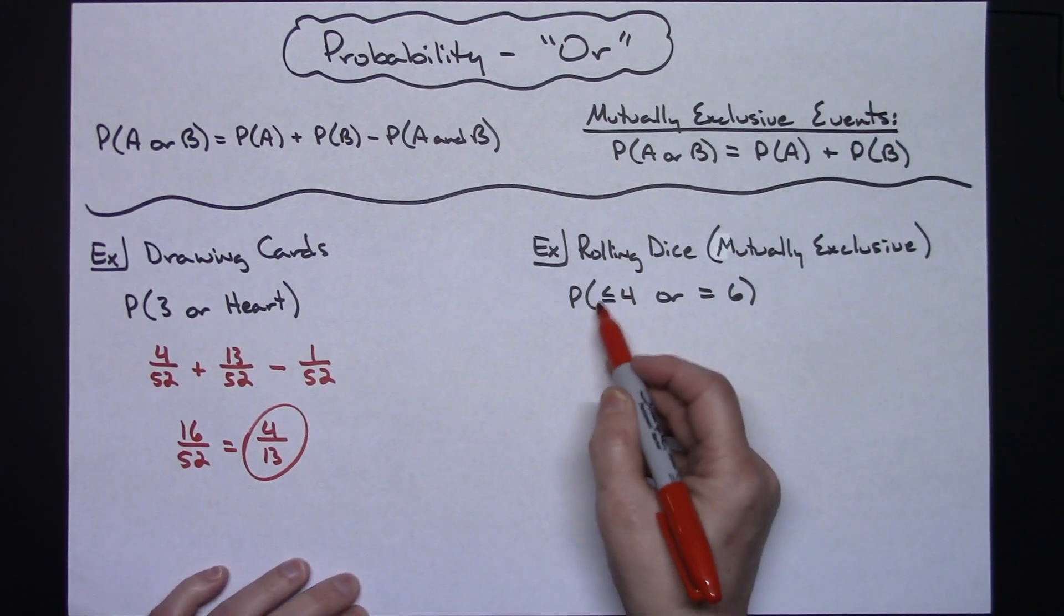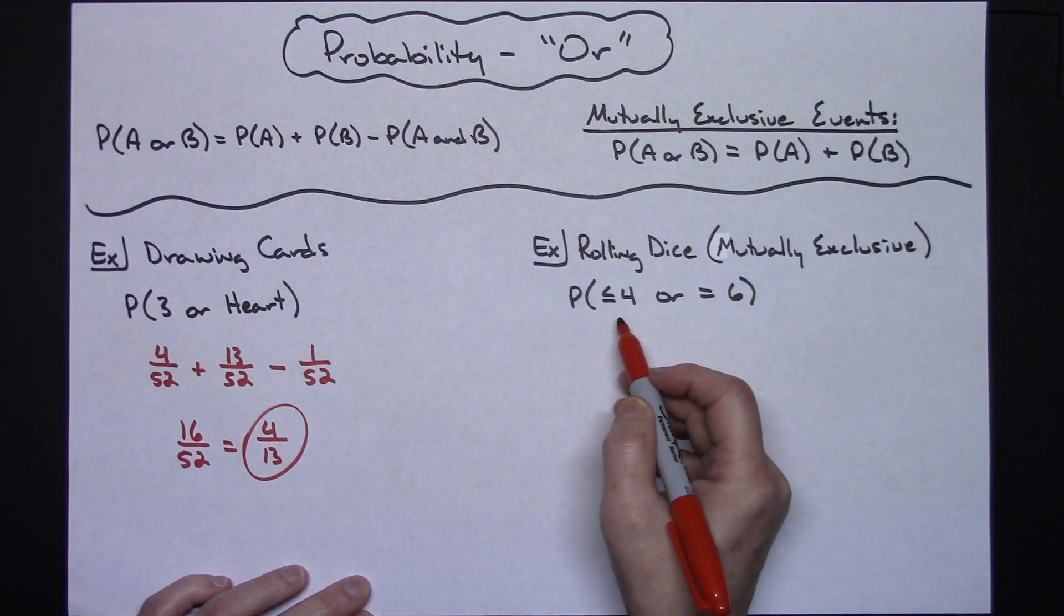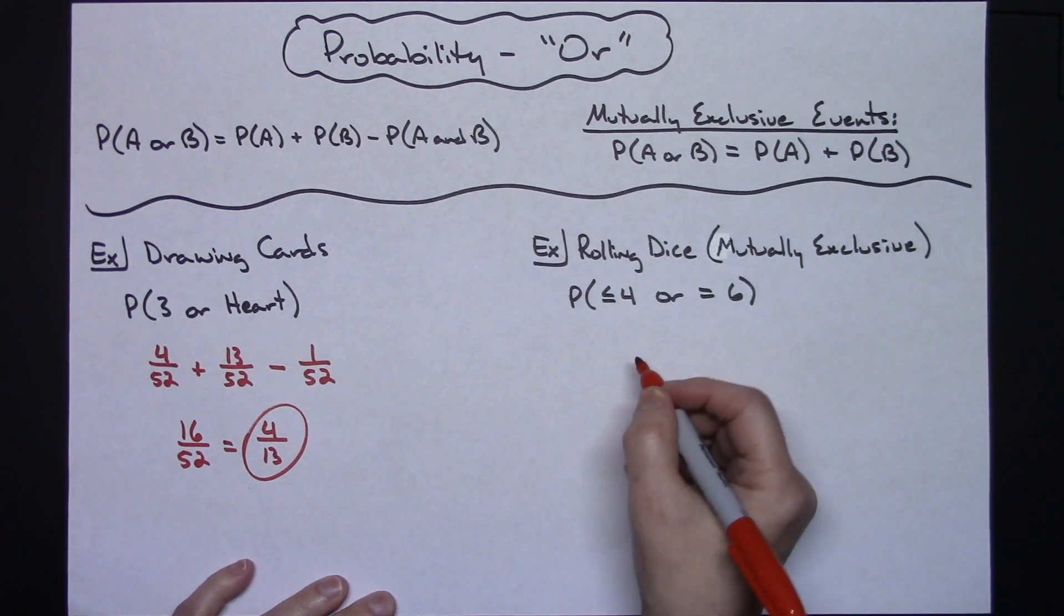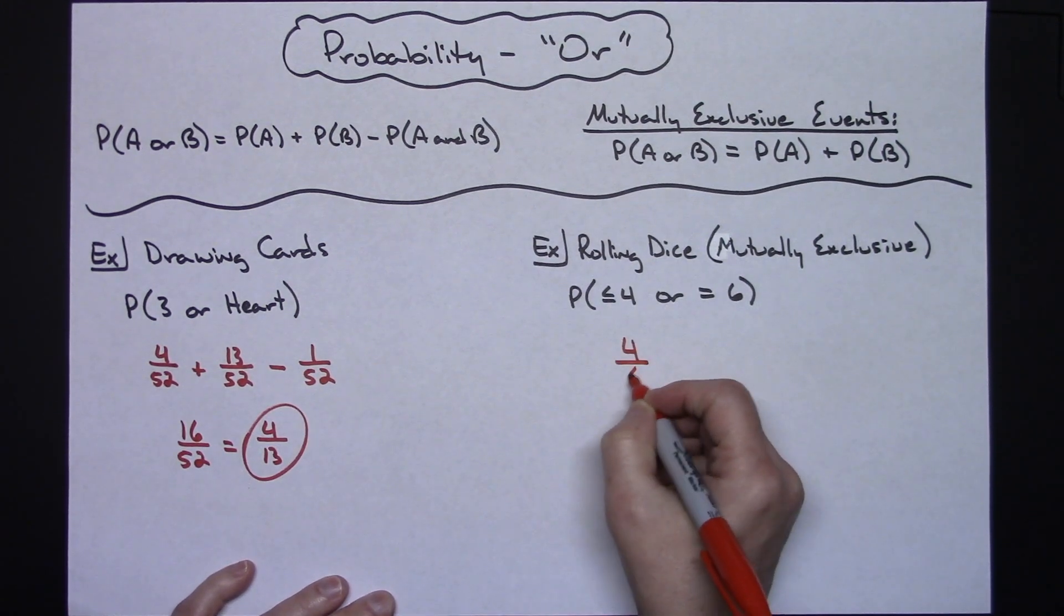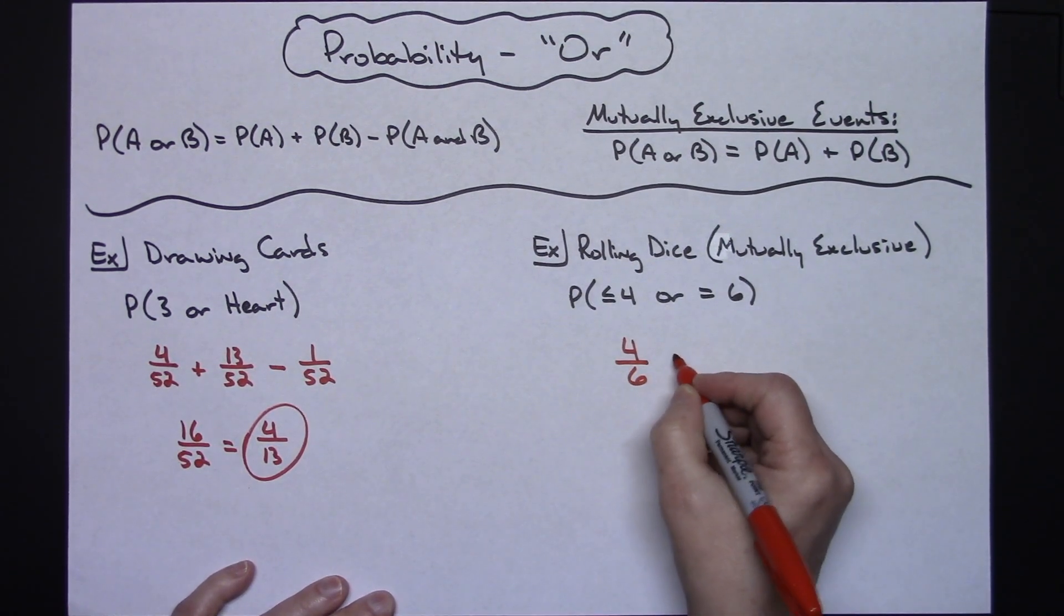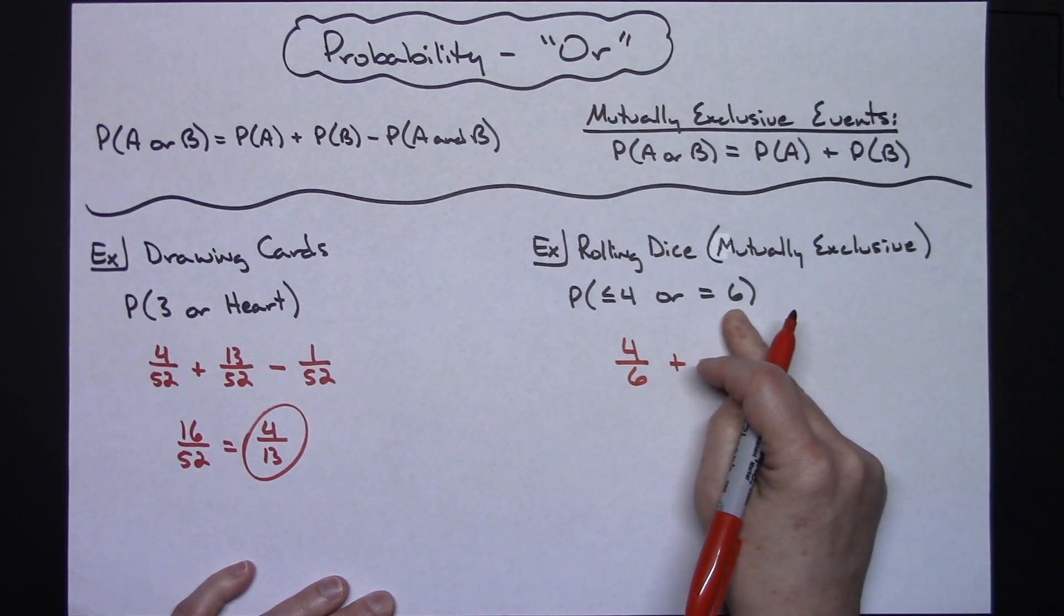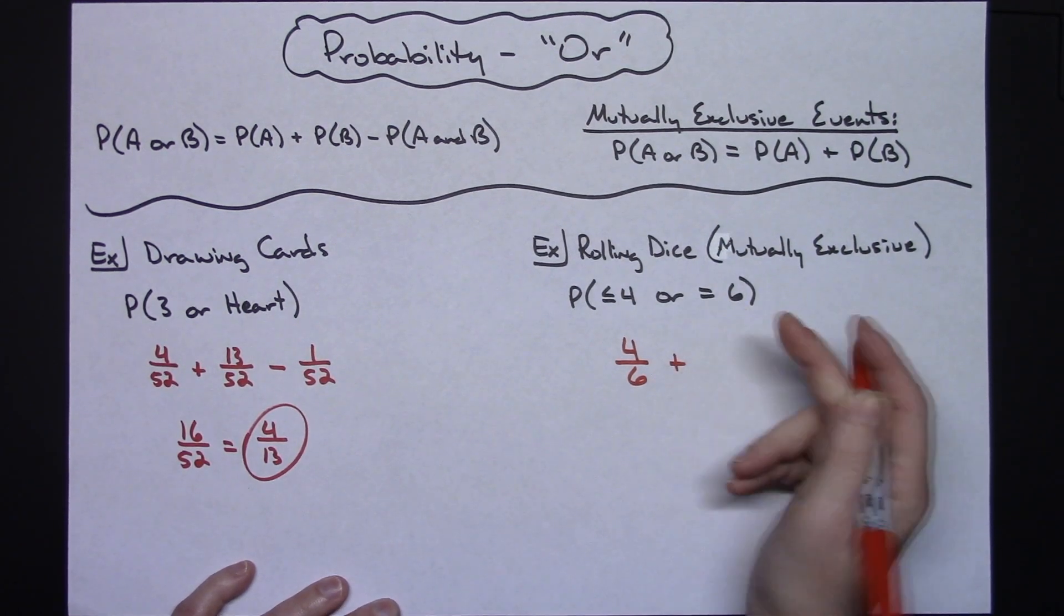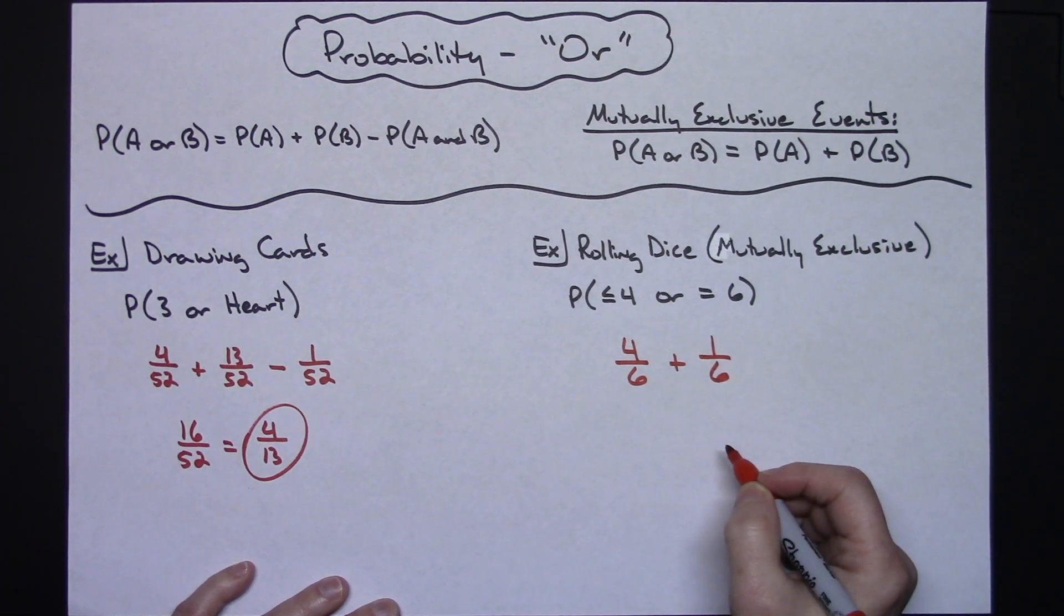So let's take a look at rolling the dice and getting less than or equal to four. Well there are one, two, three and four on the dice that would fit that scenario. So that's four out of the six sides. And then getting exactly a six when rolling the dice, that would be one. So that would be one out of six.